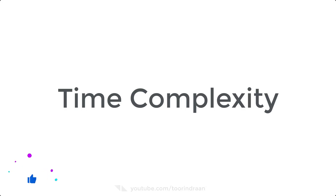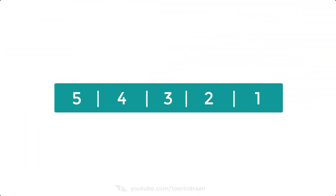Now let's talk about the complexity of the bubble sort algorithm. If you don't know what time complexity is, I highly recommend learning about it first. For the worst case, we take the numbers 5, 4, 3, 2, and 1 — a fully descending order list. Bubble sort has to do the most work here. Comparing 5 and 4: the number of comparisons is 1 and the memory access steps required to swap is 3.